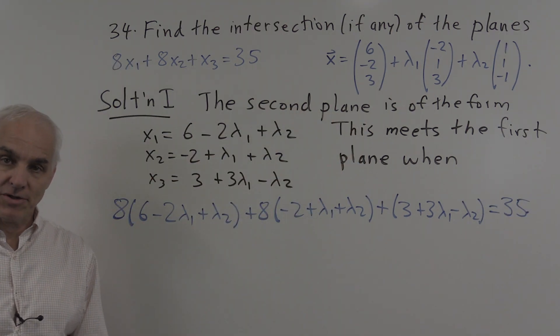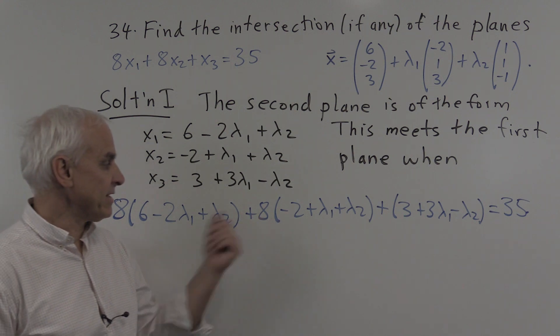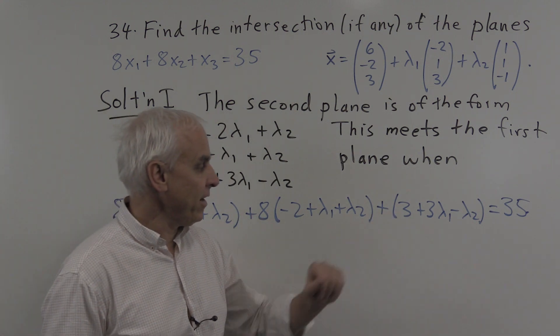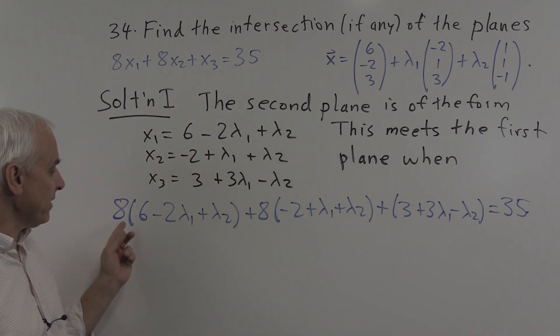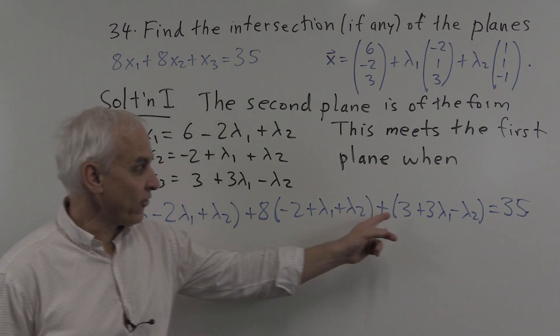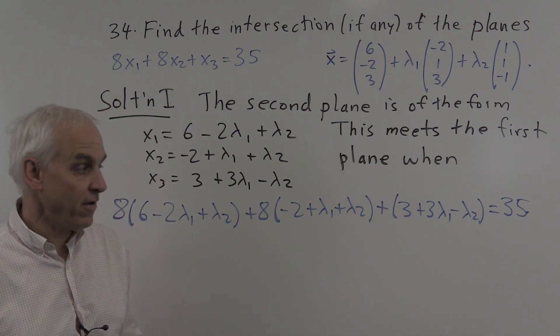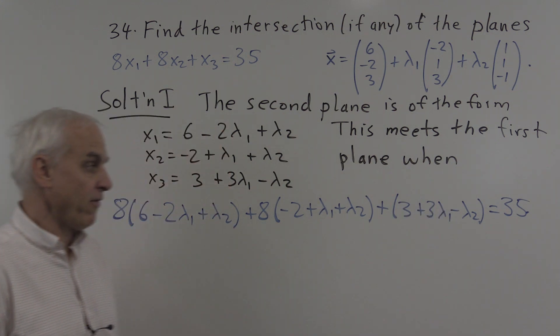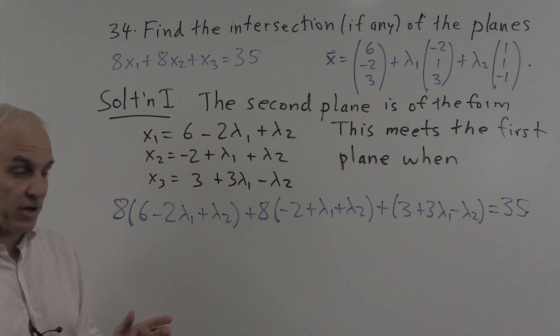Alright, so let's simplify this equation. Let's look at the constant terms. There is 48 here minus 16 plus 3. And that's 48 minus 16 is 32 plus 3. That's altogether 35. So that's actually the same thing as we have on the right-hand side. That's going to cancel.